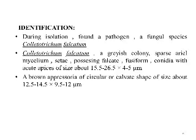Identification: during isolation, we found a pathogen of a fungal species, Colletotrichum falcatum, which forms a grayish colony with sparse aerial mycelium, possessing falcate fusiform conidia with acute apices of size about 15.5 to 26.5 × 4 to 5 µm.